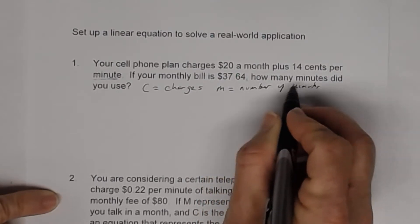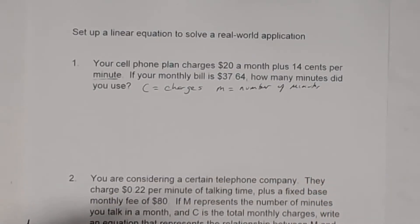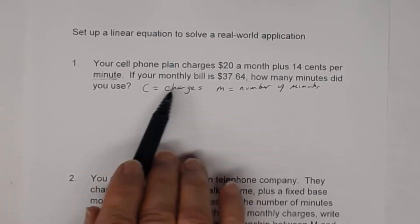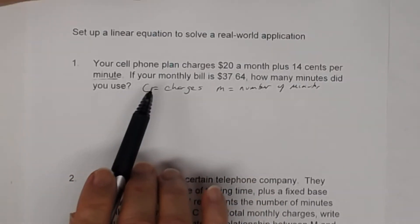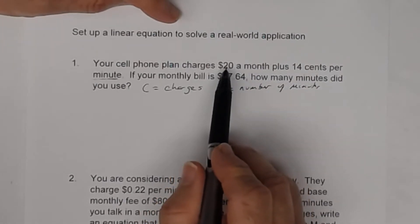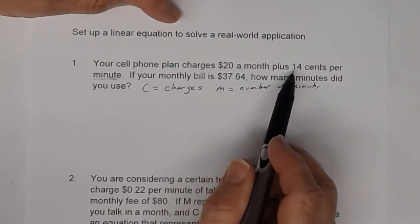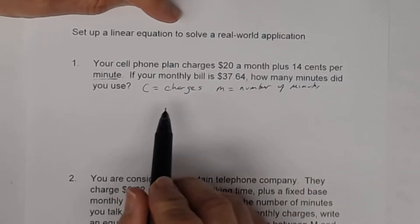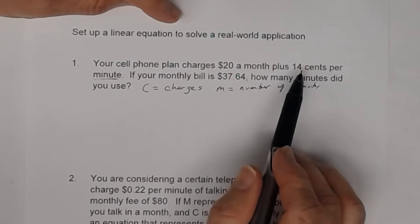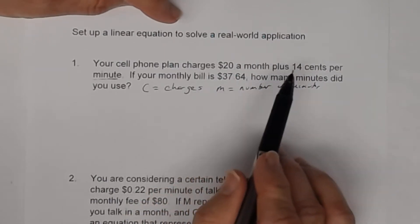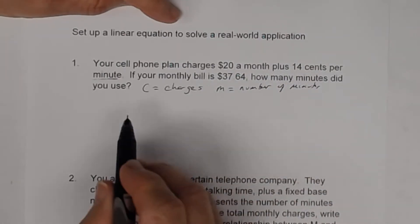Since that's what you're trying to find, we're going to let M be the number of minutes. Now with regards to the relationship between charges and minutes, here's how we're going to set this up. We have a fixed cost of $20 a month, and the cost per minute is 14 cents. You have to make sure — see how this is in cents — you've got to convert this back to dollars because this is in dollars. Your units must correspond.